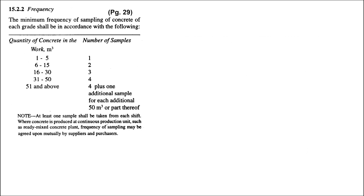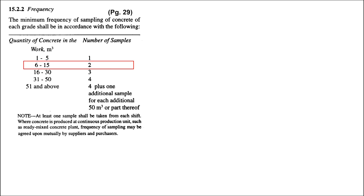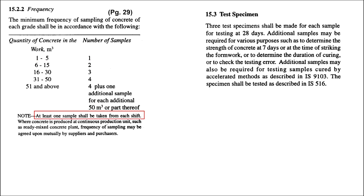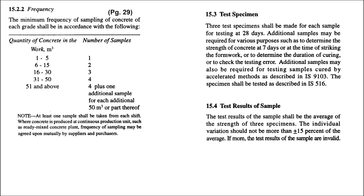Clause 15.2.2 of IS 456-2000 stipulates the minimum frequency of sampling for concrete. For 1 to 5 m³ of concrete, minimum 1 sample is required; for 6 to 15 m³, minimum 2 samples are required, and so on. It further says that at least 1 sample shall be taken from each shift. Clause 15.3 states that each sample shall consist of 3 test specimens. Clause 15.4 states that a test result of samples shall be the average of the strength of 3 specimens, and the individual variation should not be more than plus or minus 15% of the average.